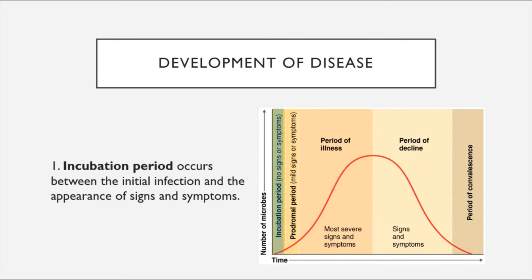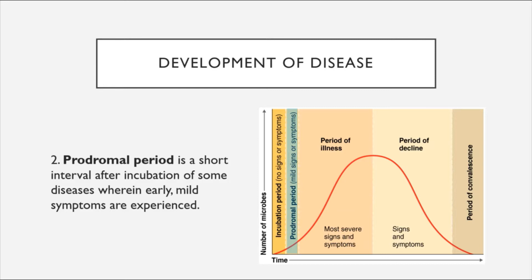When we look at the progression of an infection from initiation to its end, there are stages of development that most diseases run through. The incubation period is the first stage, occurring between the initial infection and the appearance of signs and symptoms — the time between when a person first acquires a microorganism and when they first display outward signals of infection. Next is the prodromal period, a short interval after the incubation period wherein early mild symptoms start to be experienced.